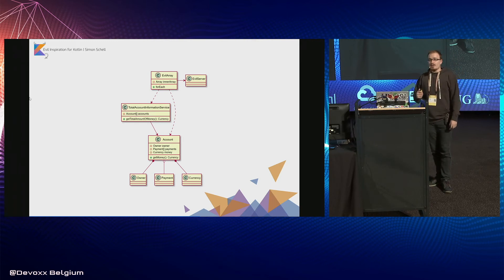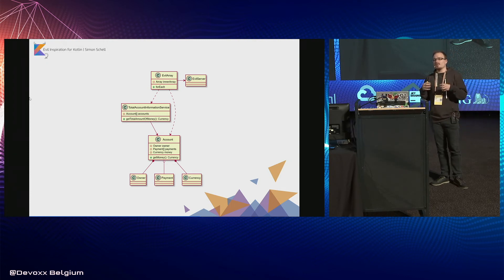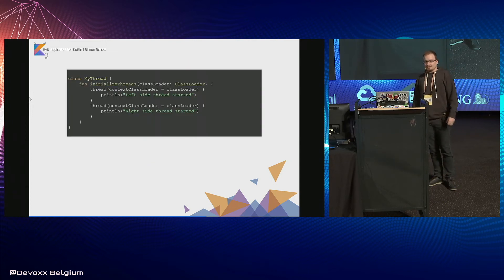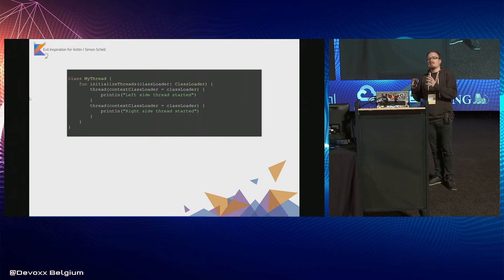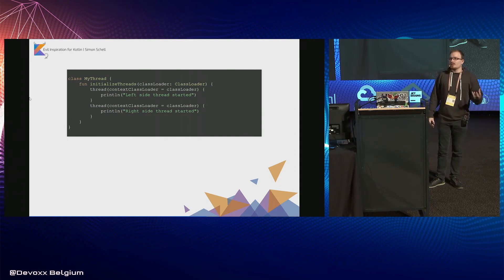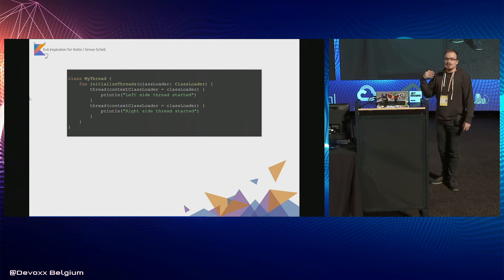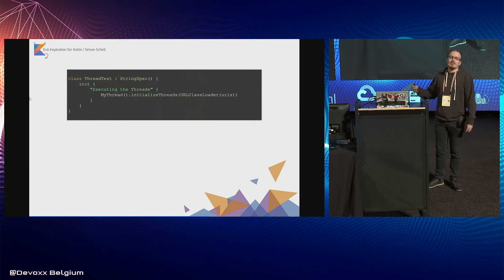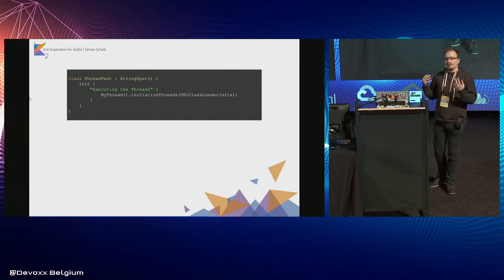If that is not enough of an example, I have another one which is actually my favorite, and it pretty much showcases what you can do with abstraction and inheritance with this type of functionality. In this example, we will use the native Kotlin extension function called 'thread', which simply creates a thread but also accepts a parameter for a class loader, and this class loader will then be used by the corresponding thread which is created. Here is an example function which simply initializes two threads when called, and I have also written a simple test to call this function but with a URL class loader and a fixed set of URLs, so everything should work fine.